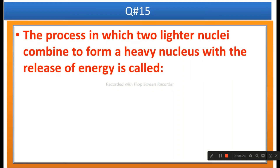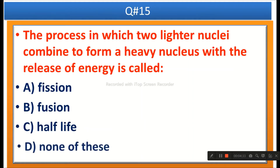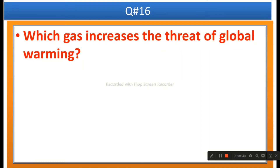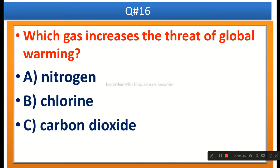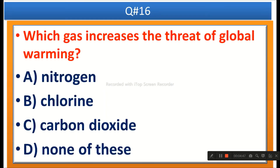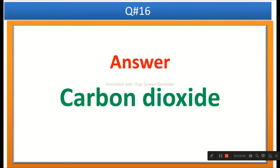The next question: The process in which two lighter nuclei combine to form a heavy nucleus with the release of energy is called — options are fission, half life, or none of these. The right answer is nuclear fusion. The next question: Which gas increases the threat of global warming? Options are nitrogen, chlorine, carbon dioxide, or none of these. The right answer is carbon dioxide.